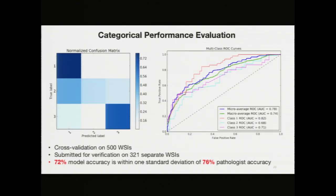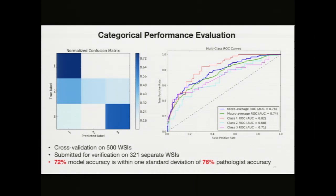I performed cross-validation for my model on 500 different whole slide images and also submitted my model's evaluation for verification on 321 different whole slide images. My confusion matrix at left represents my model's strong predictive performance in classes one and three, while class two — an intermediate grab bag between those two extreme classes — was predicted with less confidence, as expected. The receiver operating characteristic curves at right further represent the profound prognostic potential of my model, with an area under the ROC curve of 0.74, further validating my model's overall performance. Both results represent state-of-the-art in the field of tumor proliferation assessment.